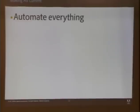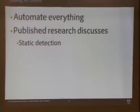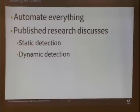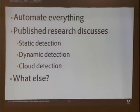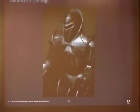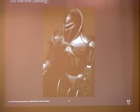The natural question to ask is: how can we make AV more current and more effective? Surveying the research, an automatic answer is that you've got to automate everything. Research discusses static detection — detecting malware for what it looks like — and dynamic detection — detecting malware for what it does. There's also detection in the cloud. But is there anything else we can do? The speaker badges remind me of the Cylons from Battlestar Galactica — and it's just a coincidence, because we need machine learning on our side. Machine learning is the process of extracting useful knowledge from masses of data.